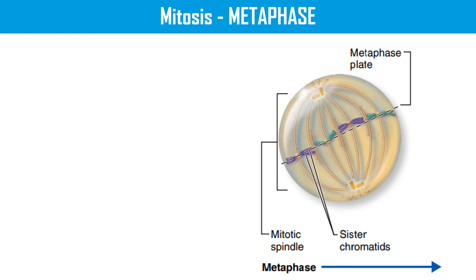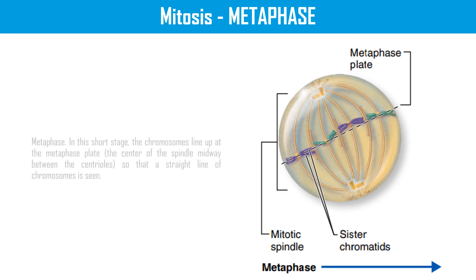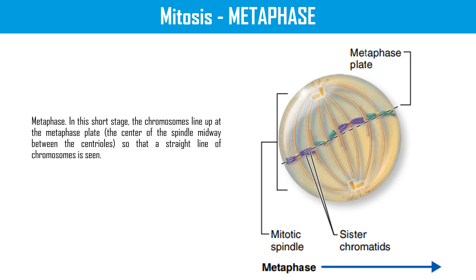Then we have metaphase. In this short stage, the chromosomes line up at the metaphase plate, the centre of the spindle midway between the centrioles, so that a straight line of chromosomes is seen.